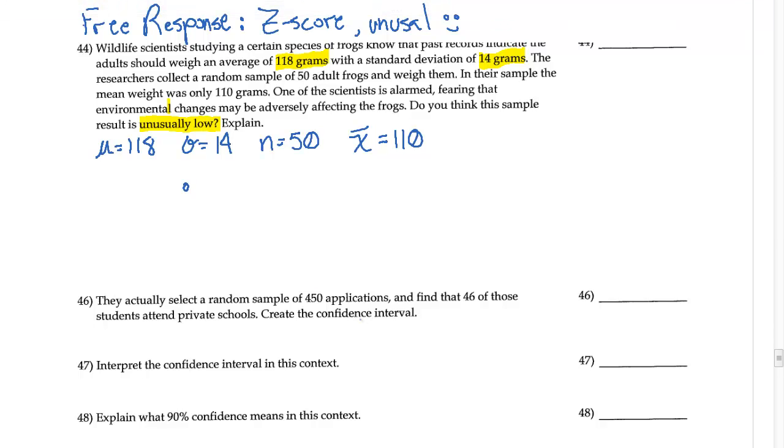Well, the idea here is that I need to draw a normal model because I do have a random sample. Frogs should be independent for the most part. Okay, I do have at least—I don't know about the 10 successes and failures with the means, okay—but I drew that terribly.